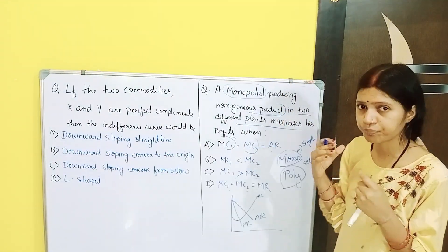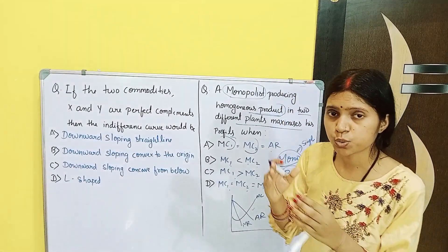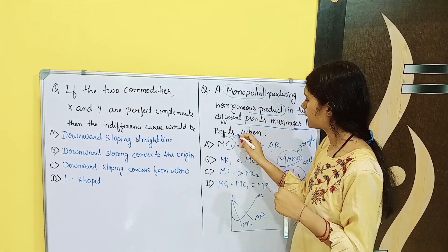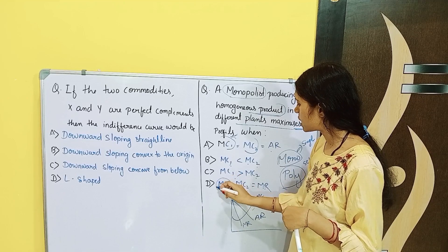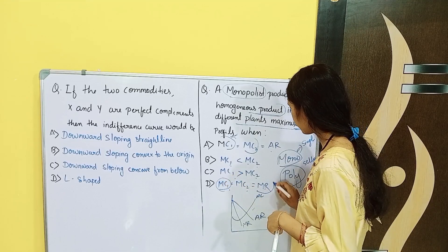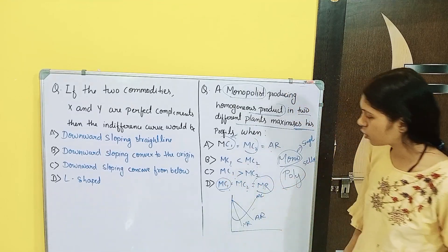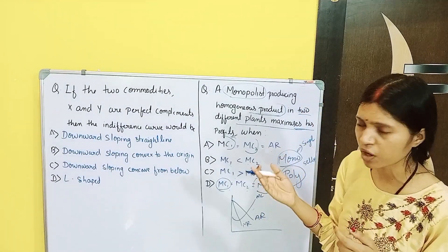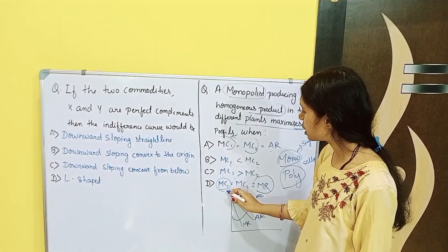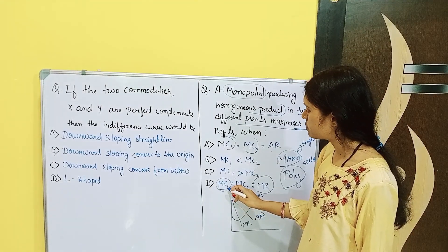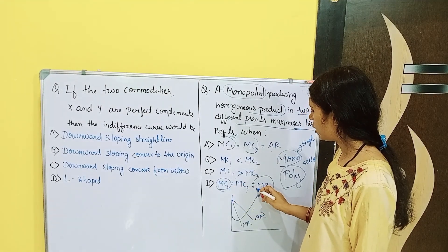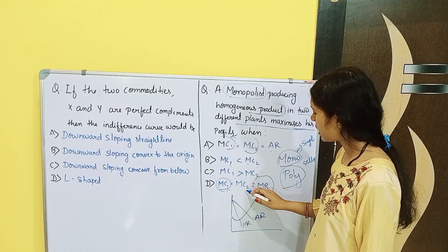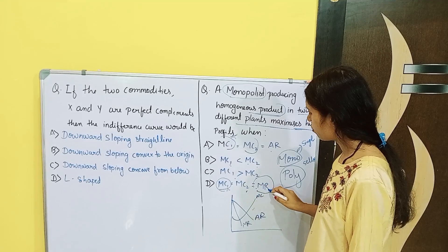What will happen in this situation? When there are two plants to maximize profit, MC1 Marginal Cost and MC2 — if we equate one to the other, there will be maximum profit. So here Marginal Cost 2: MC1 and MC2 is equal to Marginal Revenue.